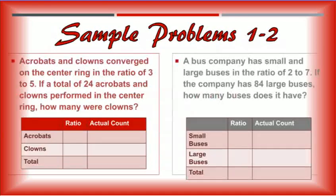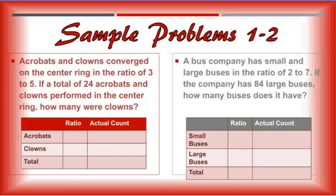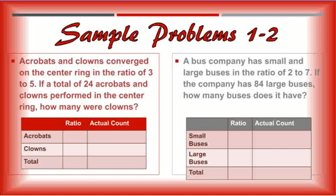Let's look at an example. Acrobats and clowns converge down the center ring in the ratio of 3 to 5. So that's our ratio. If a total of 24 acrobats and clowns performed in the center ring, how many were clowns? So you have acrobats and clowns. Keep that order because the ratio was 3 to 5, three acrobats to five clowns. That's a total. For the total, I just add the two ratio numbers. Three plus five gives me eight.